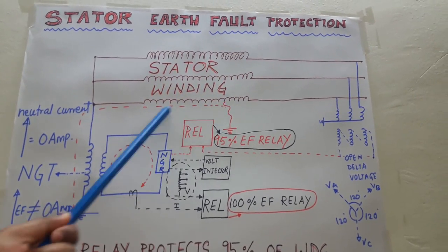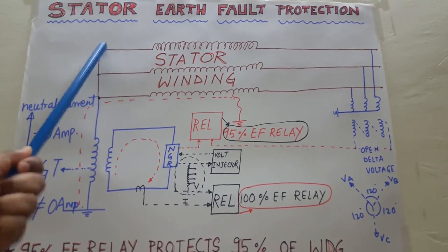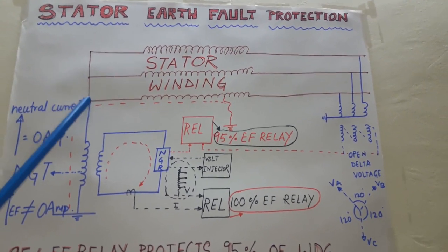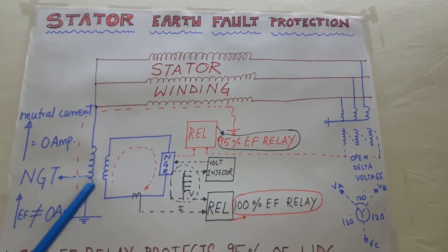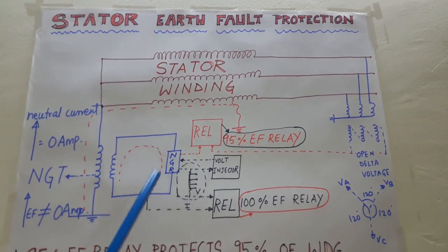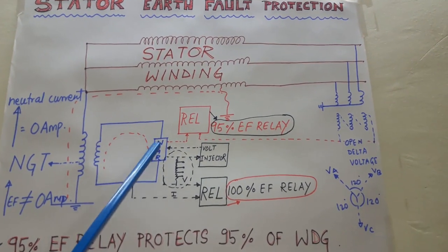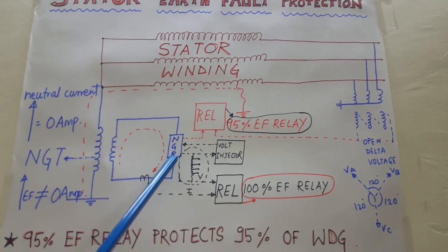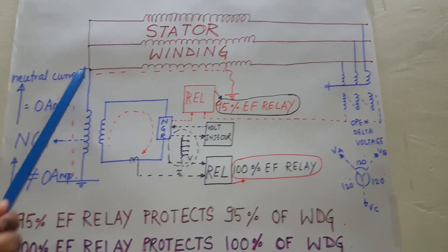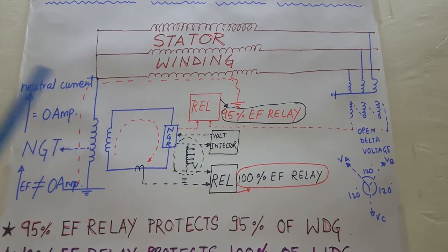This is R phase, Y phase, and B phase. All the three phases are making a star point here which is called the neutral point. From this neutral, you can see the neutral is grounded by the help of a transformer which is called the neutral grounding transformer. Across the secondary side of the NGT, a load resistor is connected which is called the neutral grounding resistor, NGR. During normal condition, there is no current flowing in the primary winding of the transformer and also in the secondary winding — the neutral current is zero.